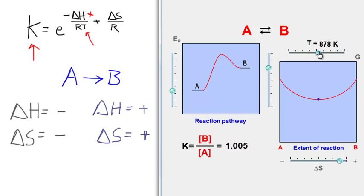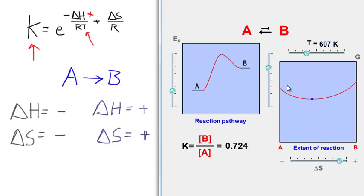As I decrease T for the endothermic process, the K value goes down. Because the signs of enthalpy and entropy are the same, I can get a crossover point — which for how I have it set is around 878 K approximately. Below that, the process is reactant favored with K being less than 1. The point is: when you want to make predictions about how the equilibrium constant will change with temperature, you have to focus on the sign of delta H. When the process has the same sign of delta H and delta S, we can switch the reaction from reactant favored to product favored, or vice versa, by changing T.